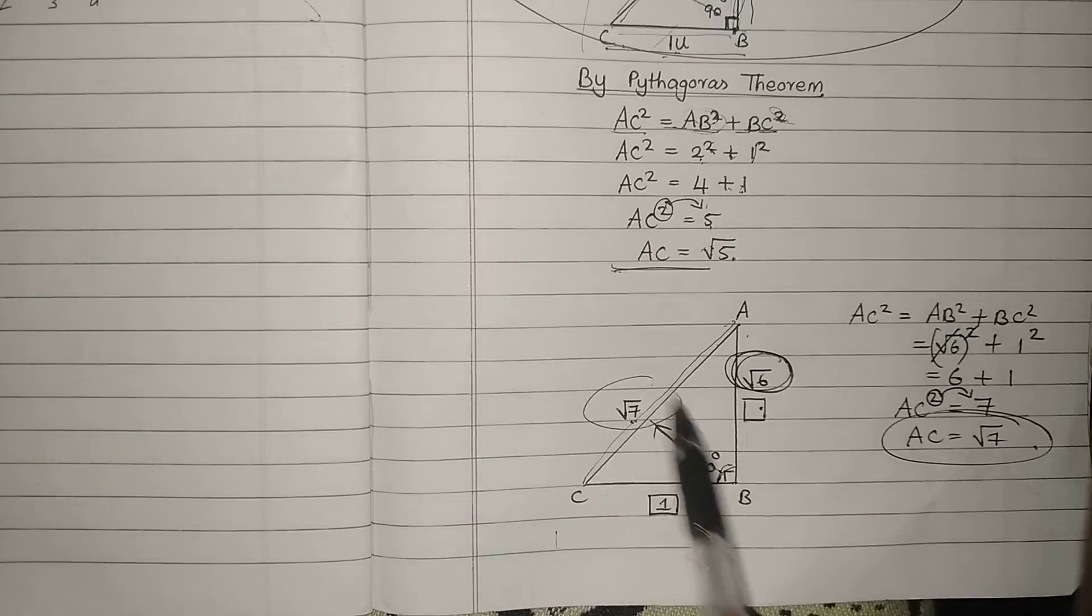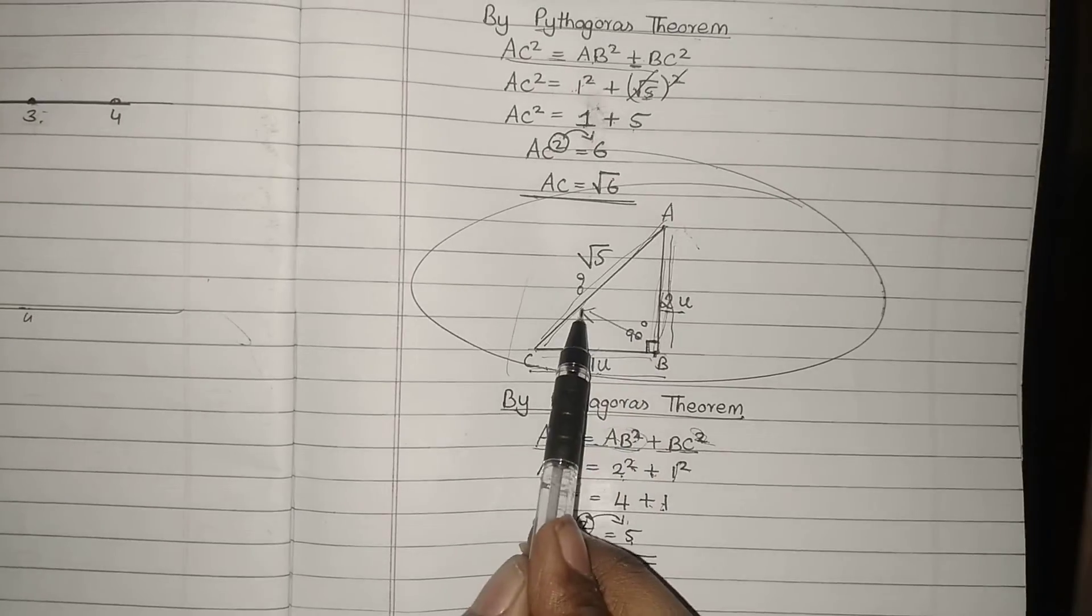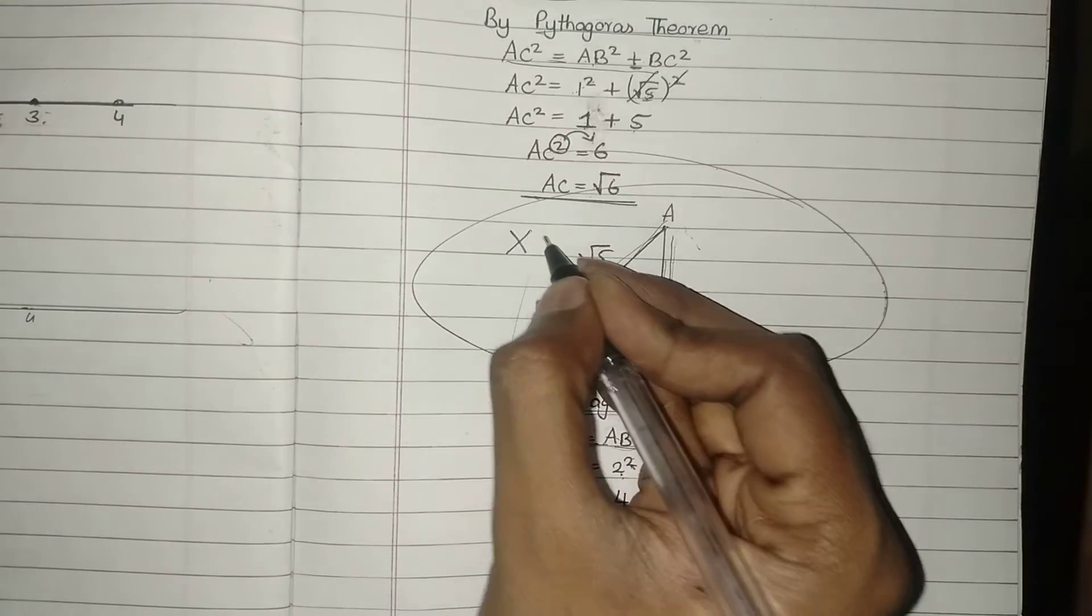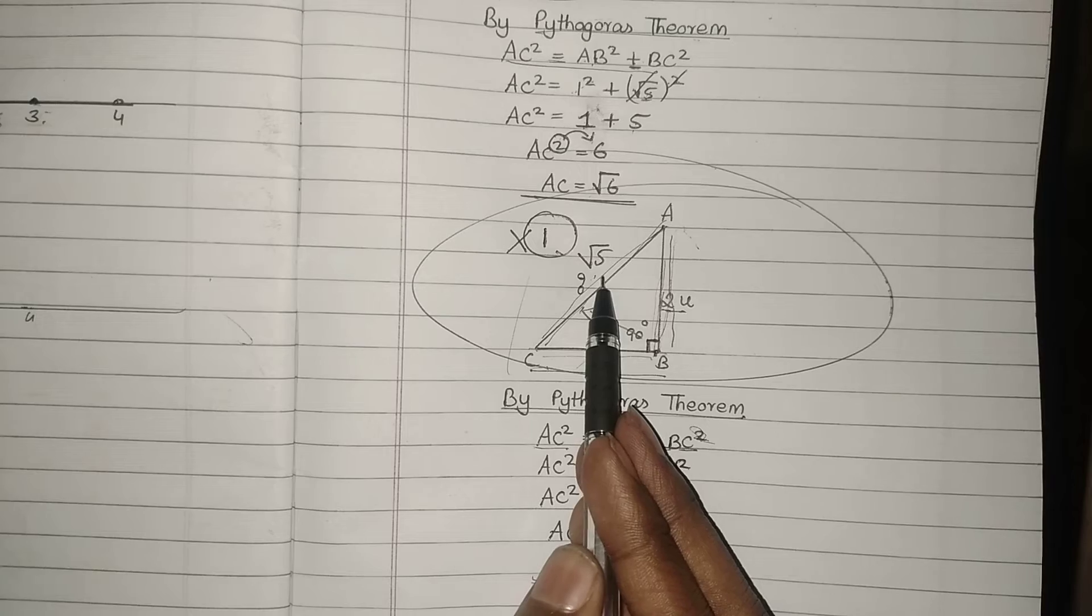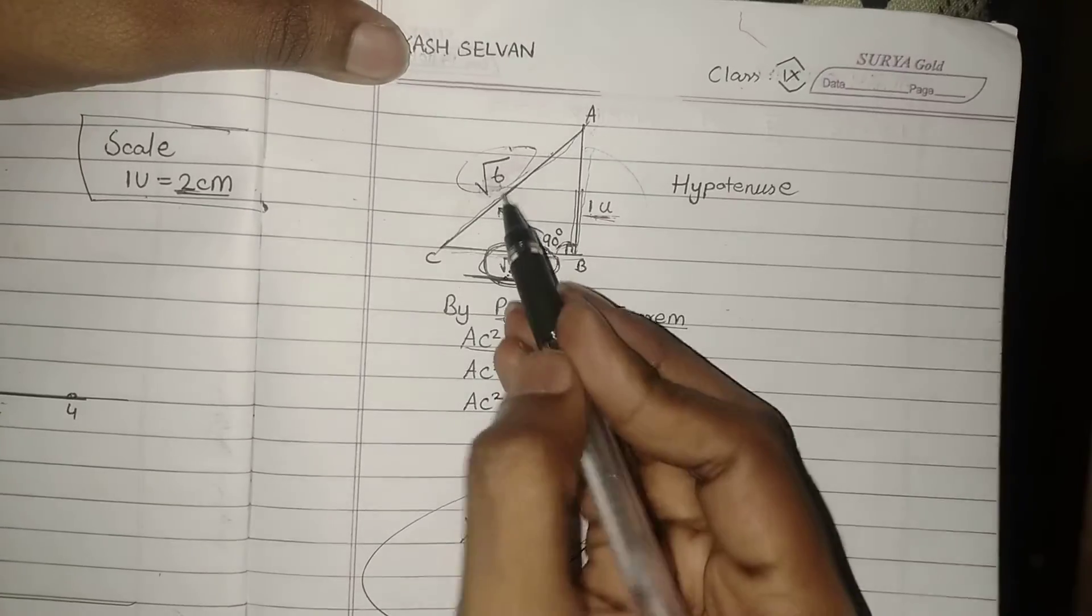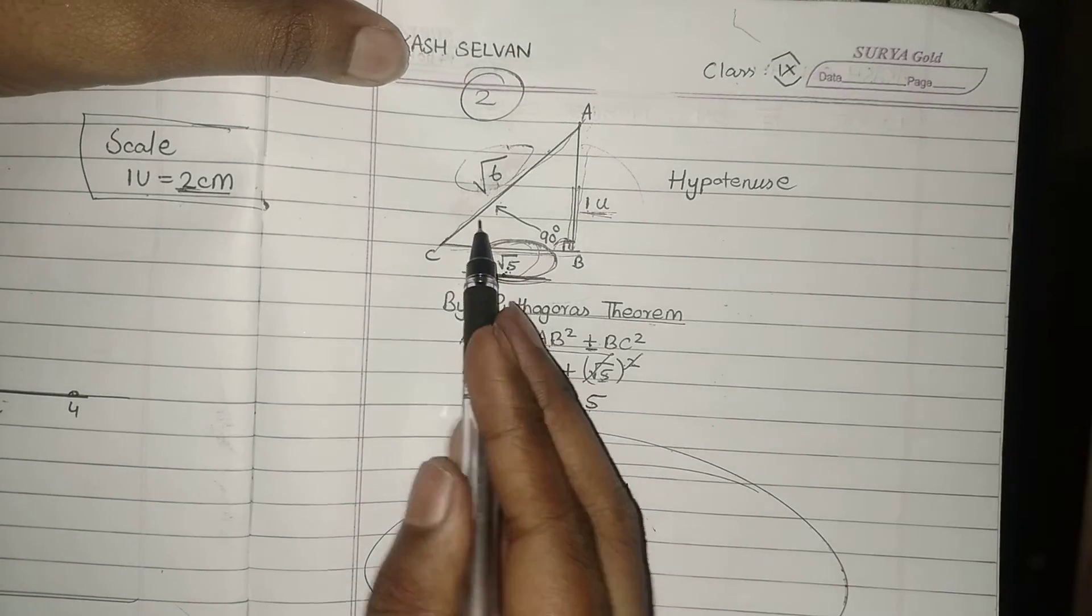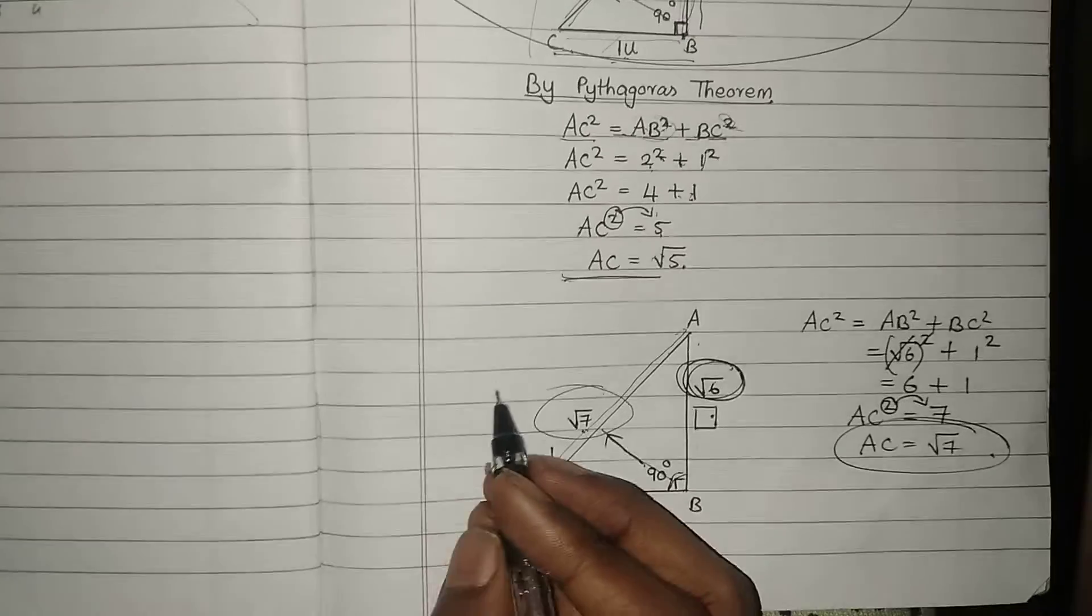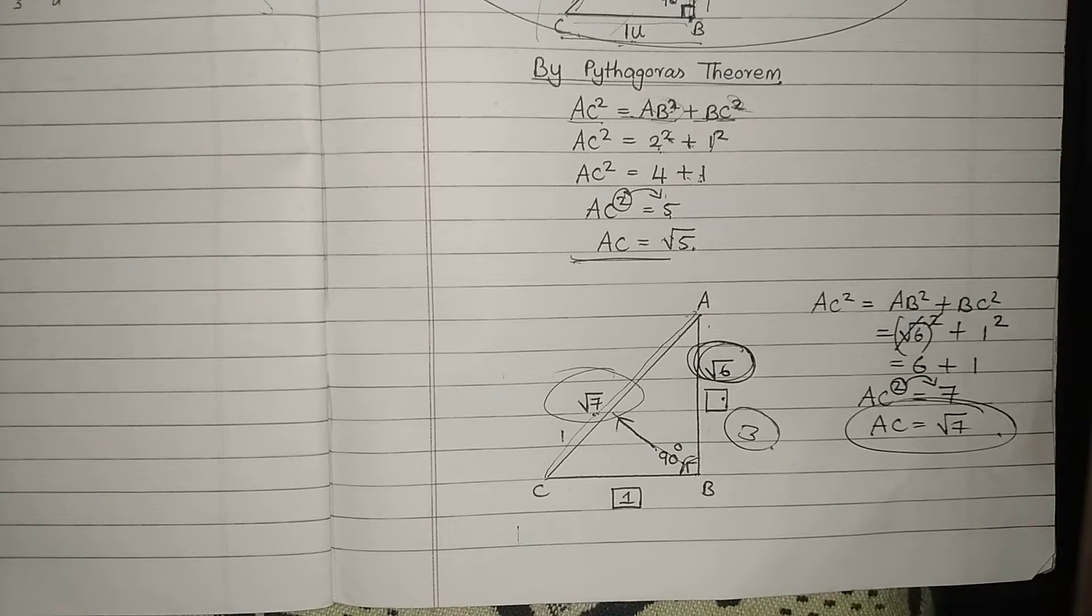We have three basic constructions to get this root 7 on a number line. The first one is this, the first sketch to locate root 5. After getting root 5, I am going to construct root 6. This is my second sketch. After constructing root 6, I will be getting root 7 by using this sketch. Come on students, let's learn one by one now.